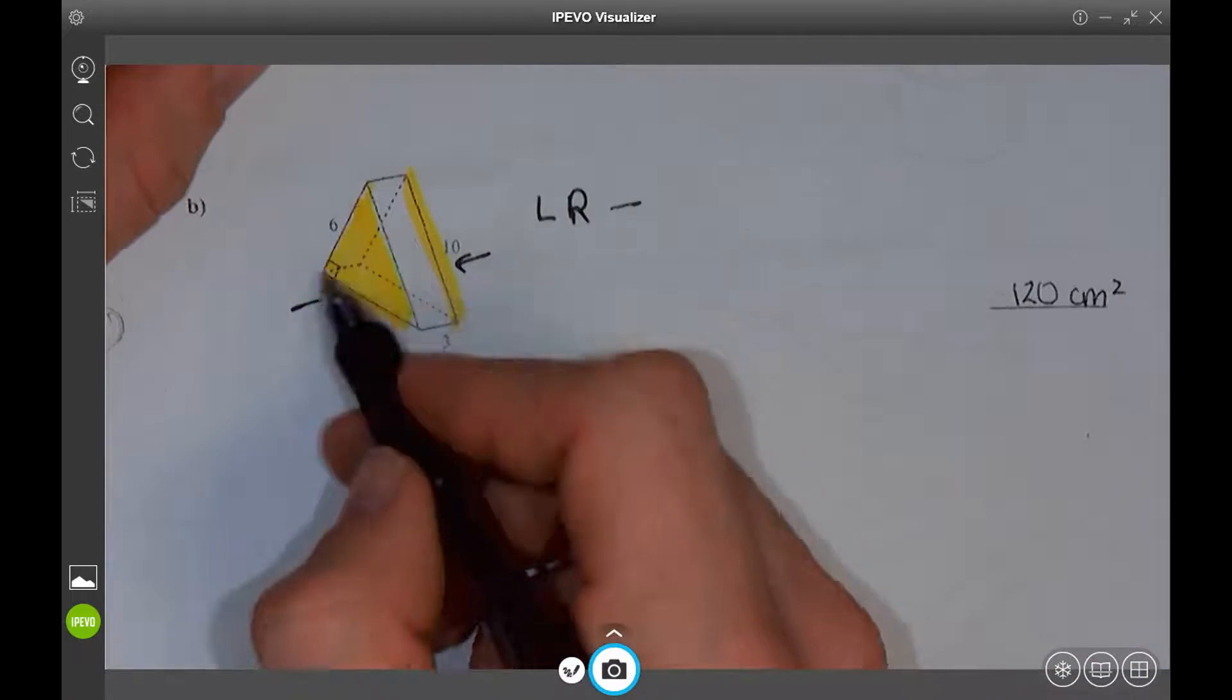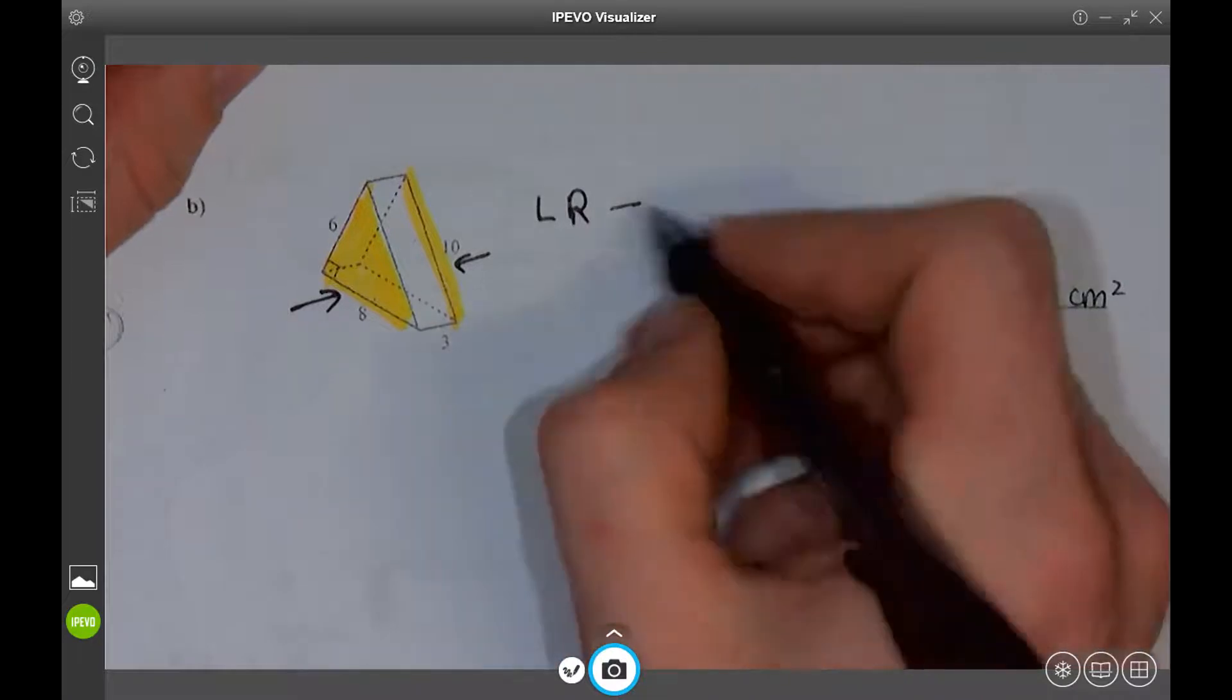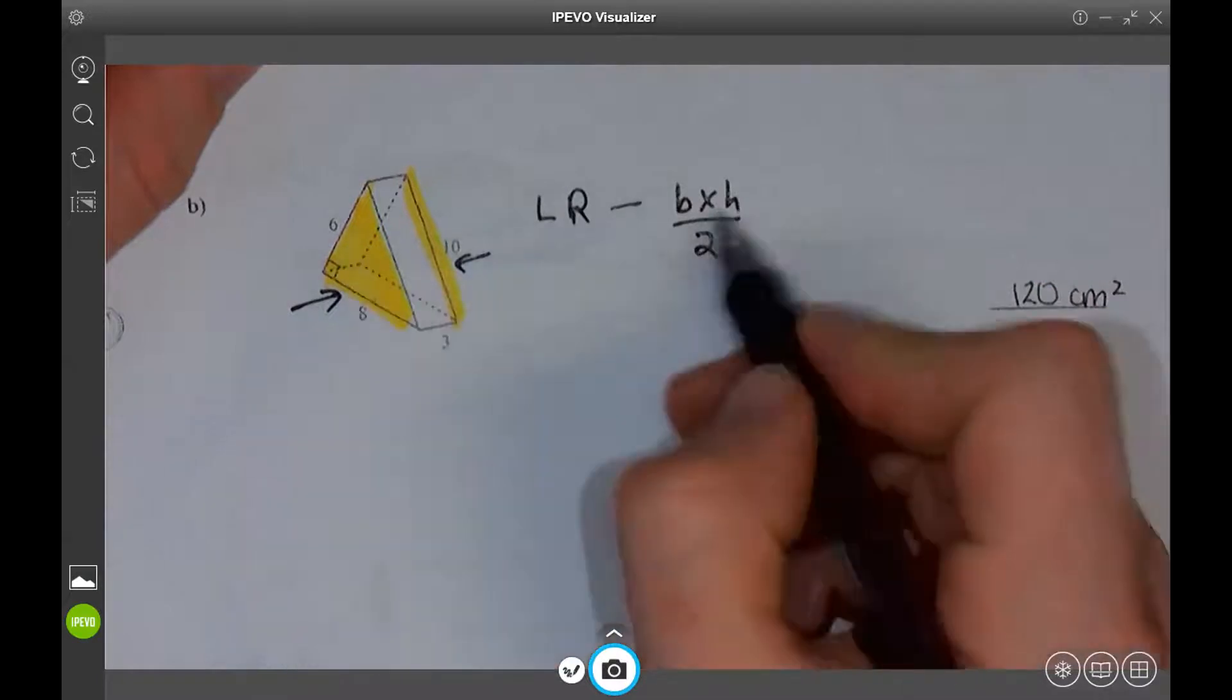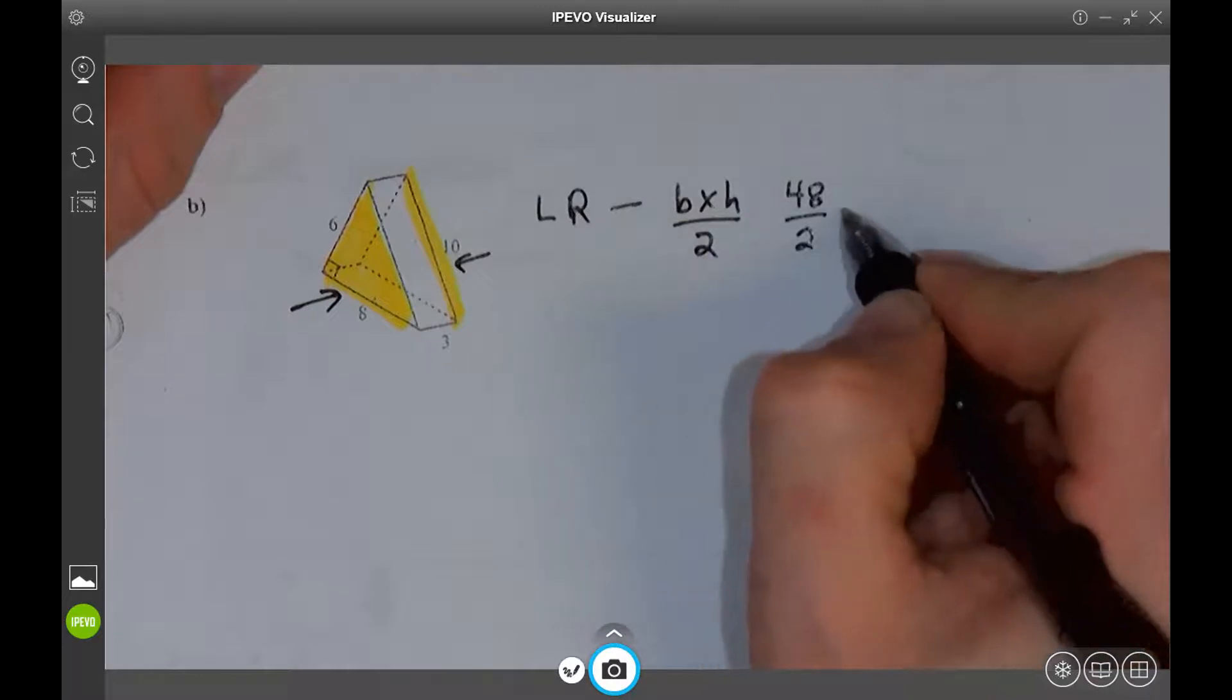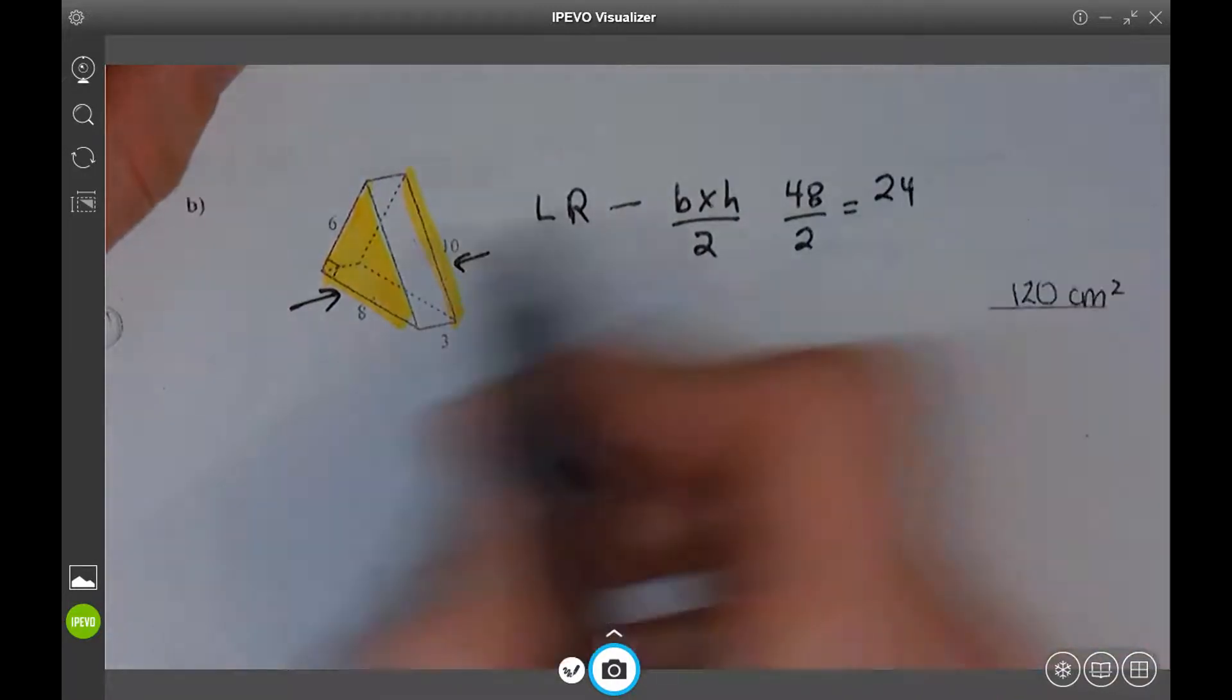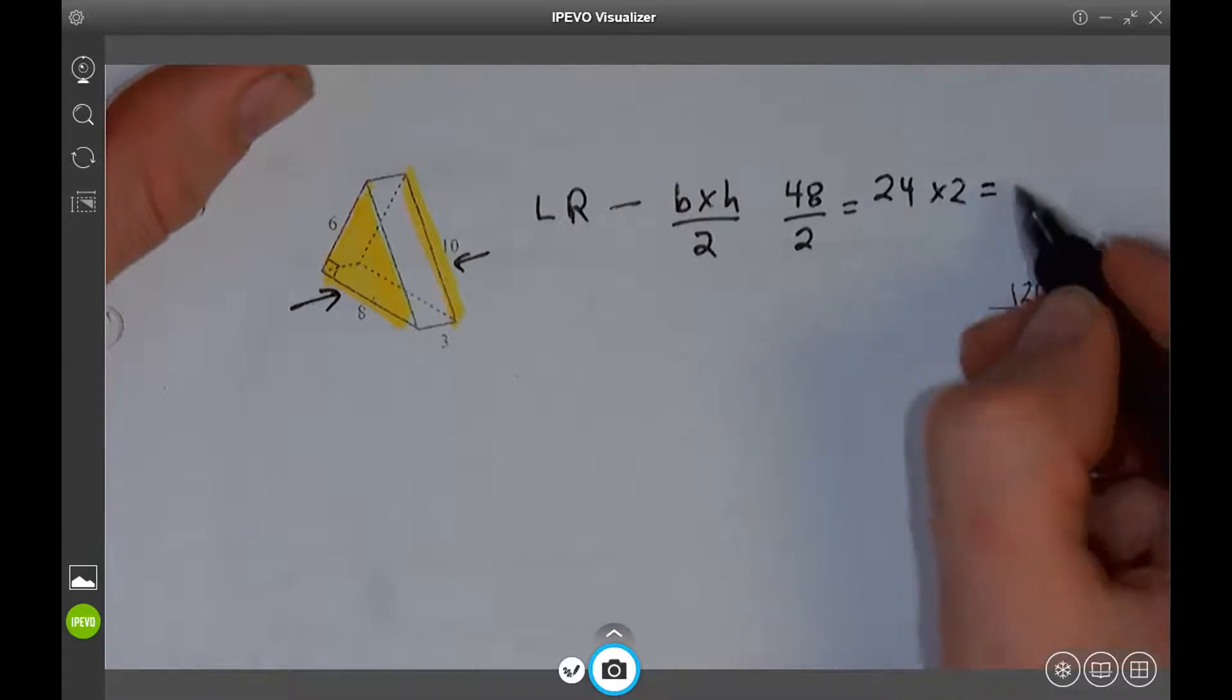So how do I find the area of a triangle? These are the pairs, the triangles. I have to go base times height divided by 2. That's how to find the area of a triangle. So I have 6 times 8, which is 48, divided by 2. That will be 24. But don't forget, there are two faces. So I'm going to multiply by 2 again, and that's going to get 48.